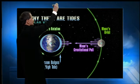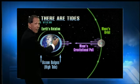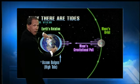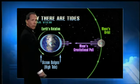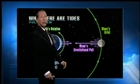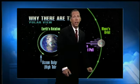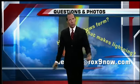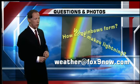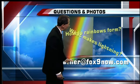If you've got the Moon at a right angle, it changes the gravitational pull and you get tides that don't have as much of an extreme. So it has to do with the Moon, the Sun, and the Earth — that's why we have tides. If you've got a question or photos you want to send me, you can reach me at weather@fox9now.com.